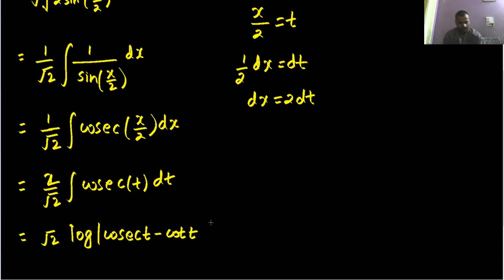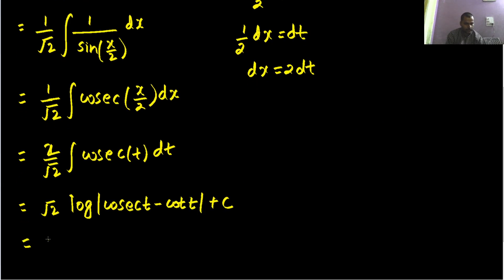Fine and there we go plus a constant c because t was our substitution. So we need to bring back this substitution and in place of t, we can now write x by 2.